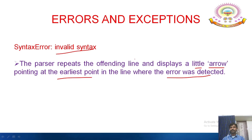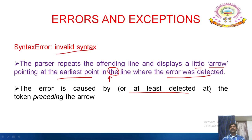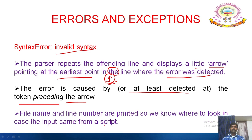The parser repeats the offending line and displays a little arrow pointing at the earliest point in the line where the error is detected. In C programming we used to get only the line number and an appropriate message, but here we get a simple arrow pointing to the location of the error. The error is caused at or detected at the token preceding the arrow. The file name and line number are printed so we know where to look, in case the input came from a script.